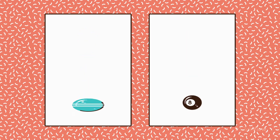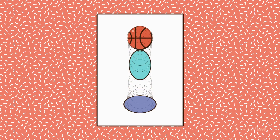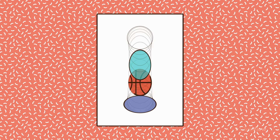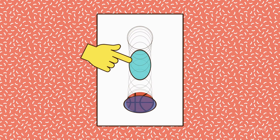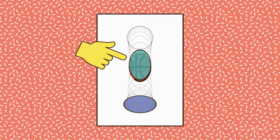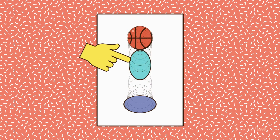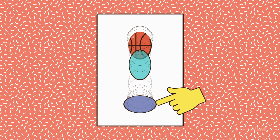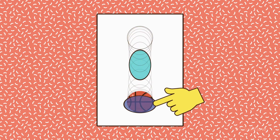One important thing to remember is that the overall volume of the object needs to remain the same during the squash and stretch. When an object gets longer, it gets narrower, or when it gets flatter, it gets wider.